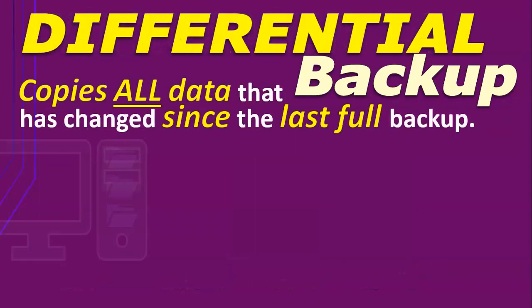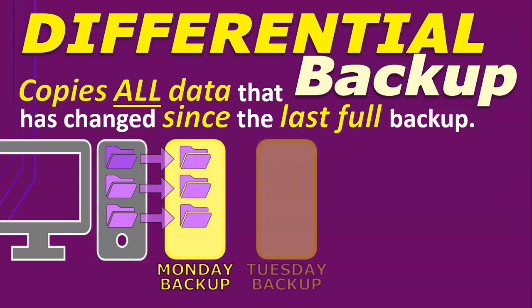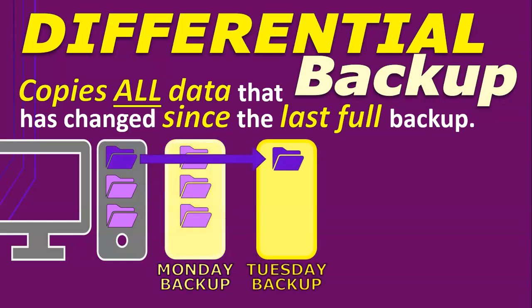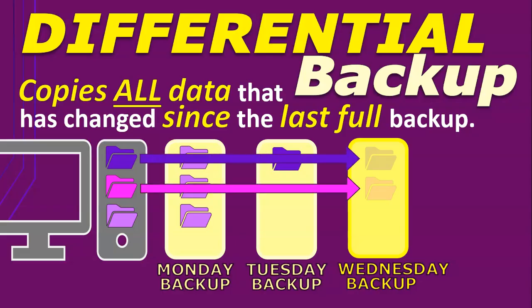A differential backup copies all the data that has changed since the last full backup. The first time is also a full backup, and the second time is only the changes made since the first backup. Both incremental and differential backups look the same at that point, but the third backup will be different in that it will contain all the changes since the full backup on Monday. It's faster than a full backup and easier to restore than an incremental backup, but it takes more time and space than an incremental backup.